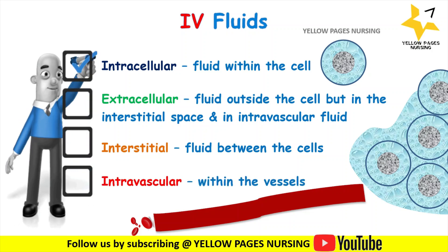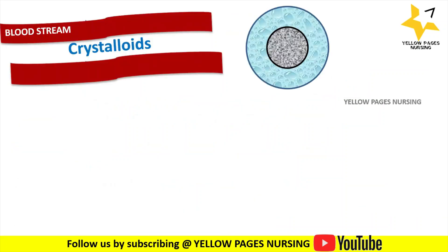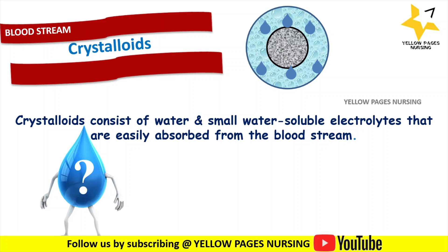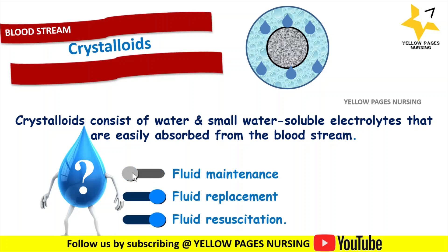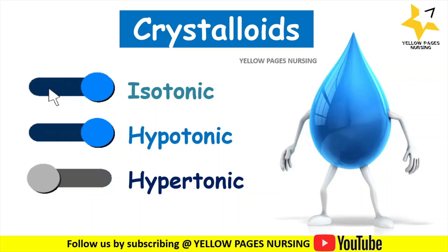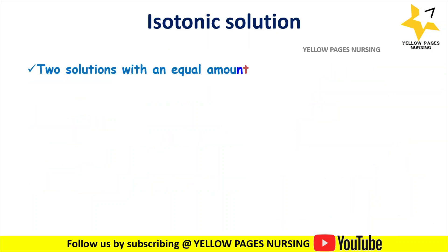Crystalloid solutions contain small molecules that easily move across semi-permeable membranes. They can easily enter into the cells and make the contents of the solution available for use. Crystalloids consist of water and small water-soluble electrolytes that are easily absorbed from the bloodstream. They are mainly indicated for fluid maintenance, fluid replacement, and resuscitation. Based on relative tonicity in relation to plasma, crystalloid solutions can be categorized into isotonic, hypotonic, and hypertonic solutions.